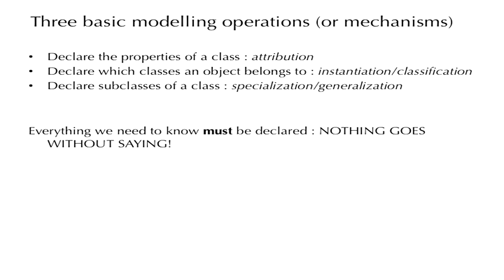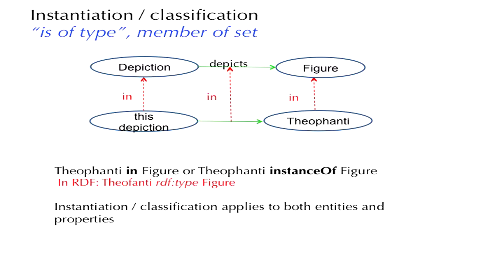Everything we need to know must be declared, otherwise it would be impossible for a machine to understand, because a model has to be understandable by both humans and machines. The assignment of properties — that is, attribution — we have already talked about, so let us turn to the mechanism called instantiation or classification.